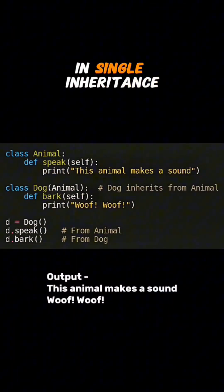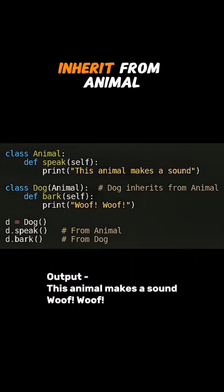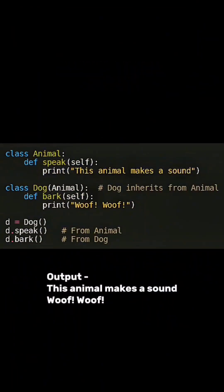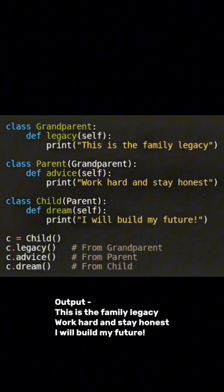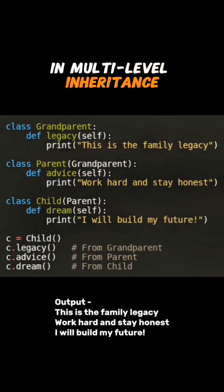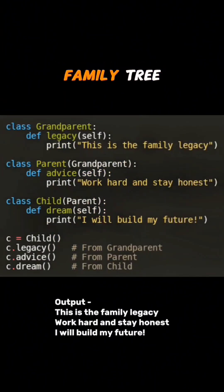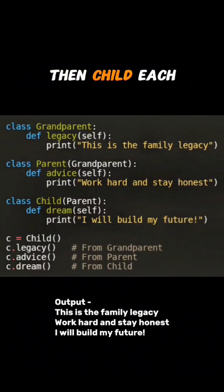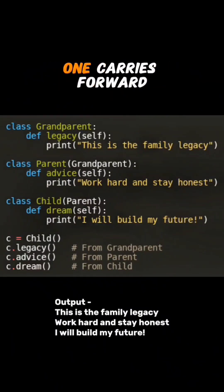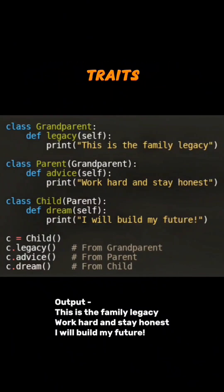For example, in single inheritance a Dog can inherit from Animal — the Dog can now bark and speak without rewriting code. In multilevel inheritance it's like a family tree: grandparent to parent then child, each one carrying forward traits.